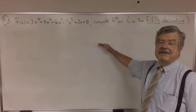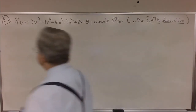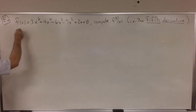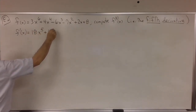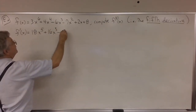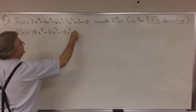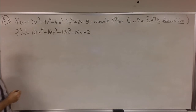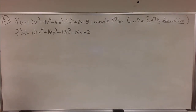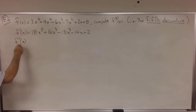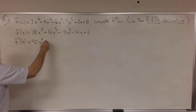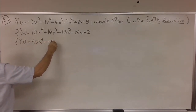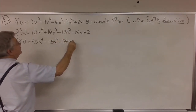Because to compute the fifth derivative, I need to know what the fourth derivative is. But to get the fourth derivative I need to know what the third derivative is, and so forth. So I'll start with the first derivative, f prime of x. That's 18x to the fifth plus 16x cubed minus 18x squared minus 14x. And then the second derivative: 5 times 18 is 90x to the fourth plus 48x squared minus 36x minus 14.